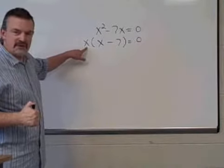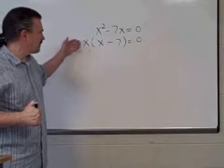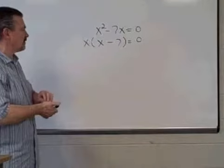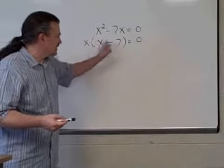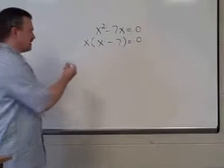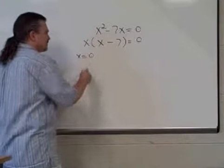What value could we put in place of x here that would make the whole quantity become zero? Well, that would be if x was zero. If x was zero, zero times anything would be zero, so x equals zero is one of our solutions.